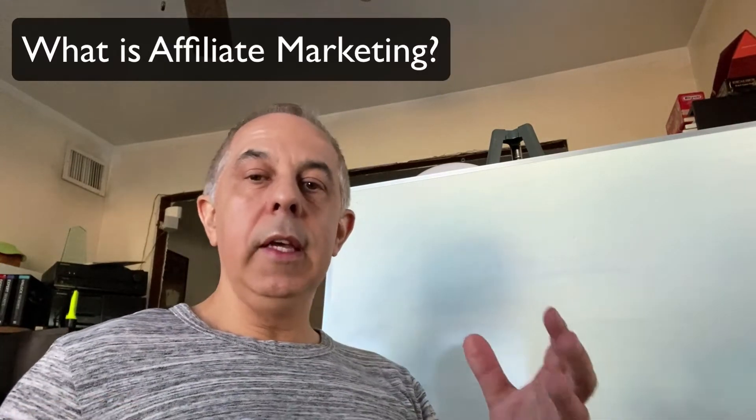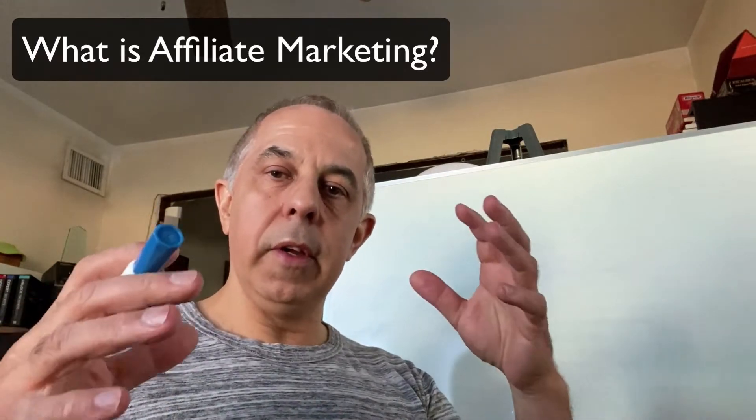Affiliate marketing is when there is a product — let's use Amazon as an example. Amazon has a product, and you as a marketer are the middleman. There's a buyer, and the marketer — which is you — puts the customer who's looking for something together with Amazon, and if they decide to buy, you get paid.